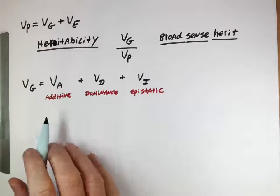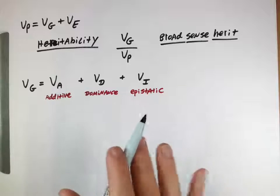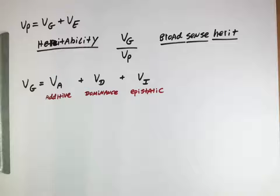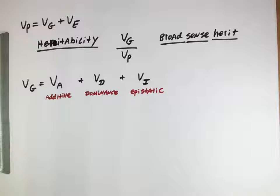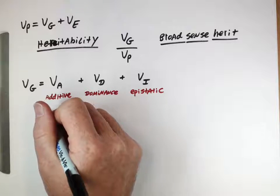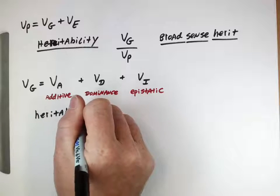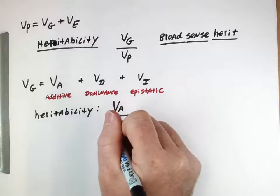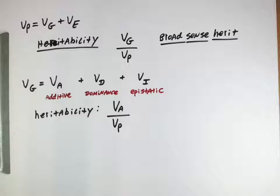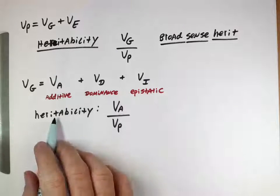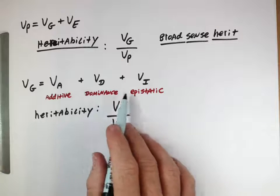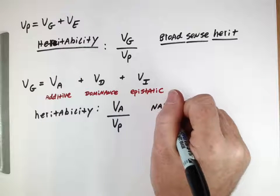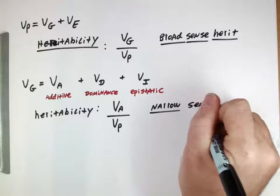Of these genetic factors, the one most consistently inherited from parent to offspring is the additive effects. Epistatic effects depend on combinations of many things, and dominance effects are less consistent because one or two copies look the same, and when combining with the other parent it's not as consistent in a Punnett square. But if a parent has two copies of an additive allele, their offspring are much more likely to have that phenotype. So the most consistently inherited aspect of genetic variance is the additive genetic variance, and we'll call this the narrow sense heritability.